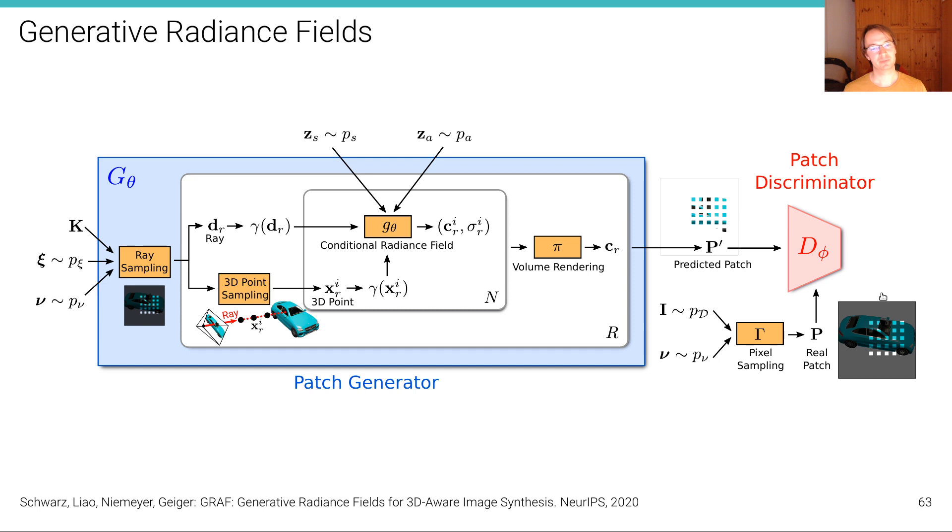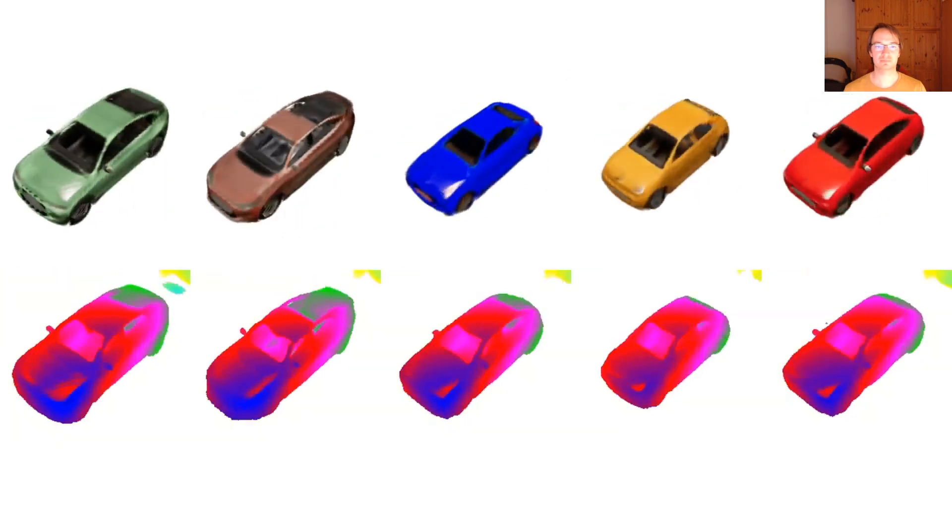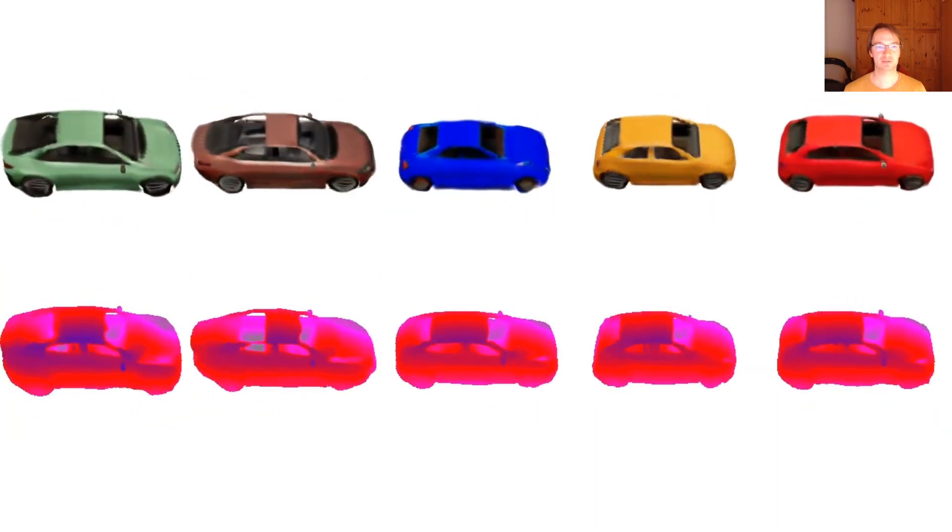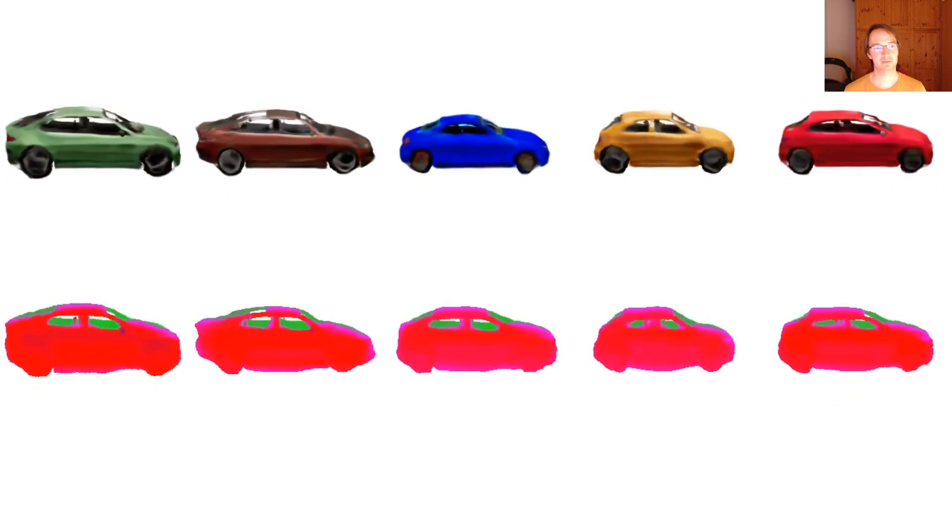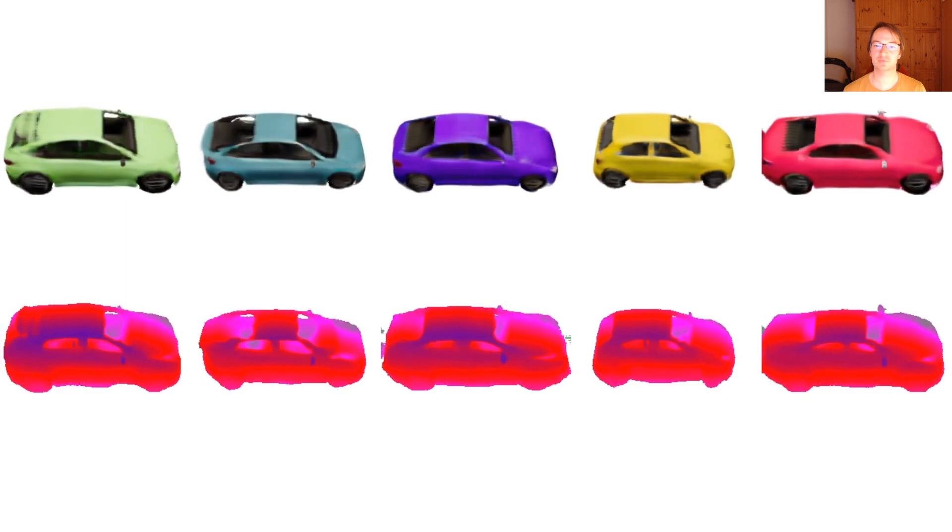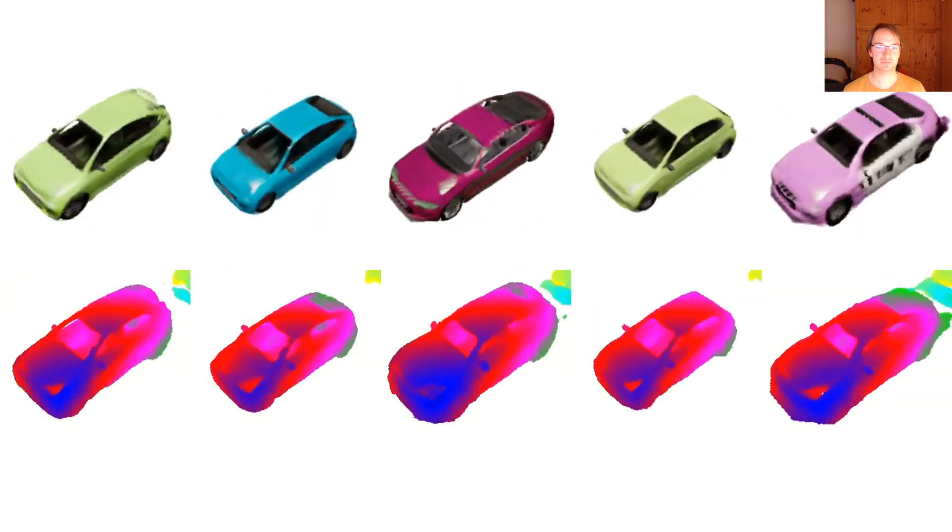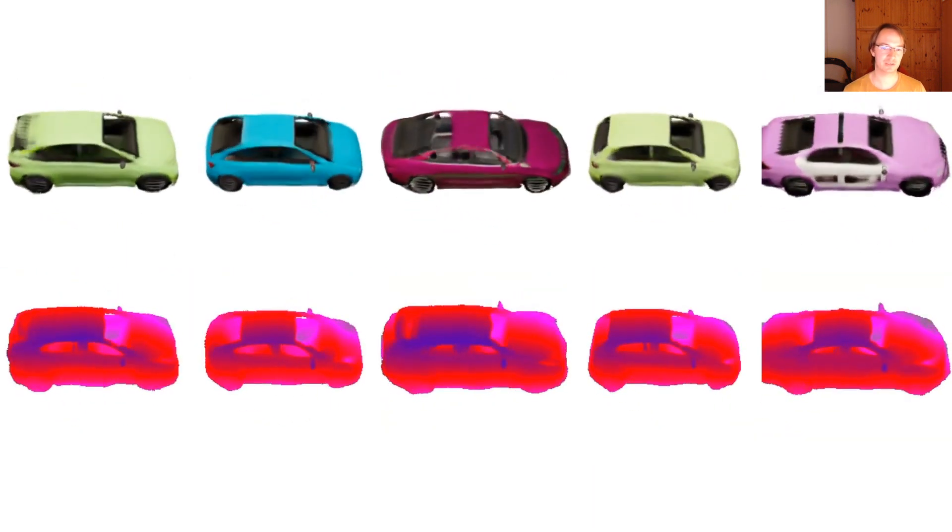And we've presented a model that demonstrated that this is possible. Just from a set of RGB images, we can recover a disentangled representation where we can then afterwards manipulate the pose, the camera viewpoint, the shape, or the appearance of the object and obtain the RGB rendering or a depth map or 3D geometry on the bottom row here in this false color notation.